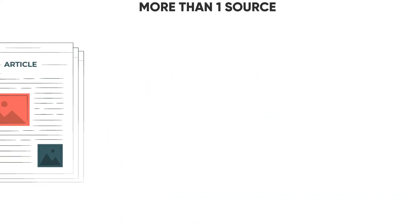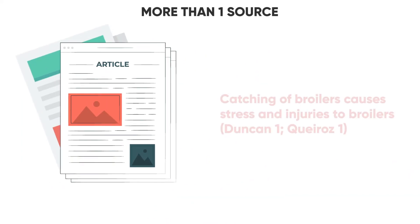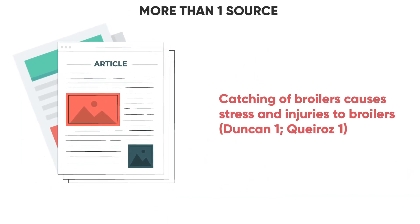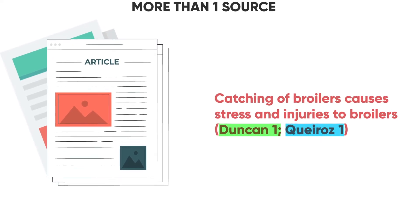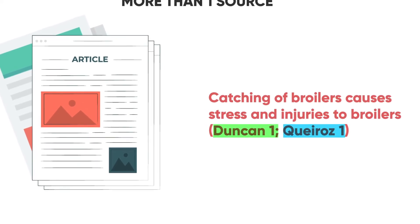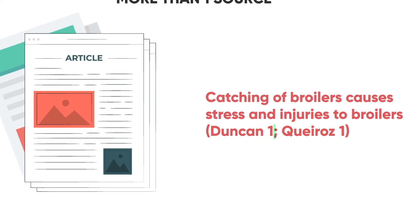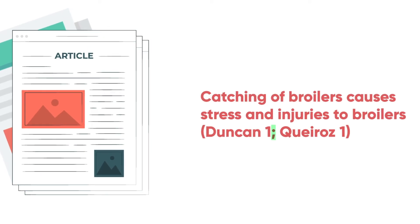Sometimes you may need to cite more than one source. In that case, you can write like this at the end of the sentence — you can have two citations separated by a semicolon.